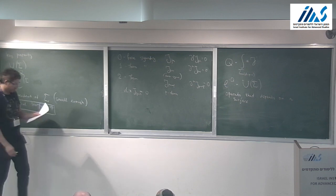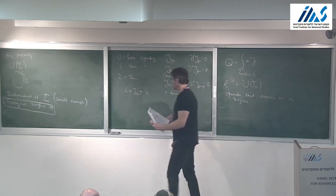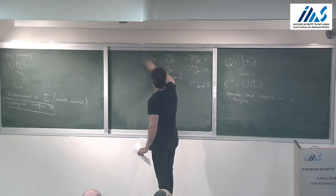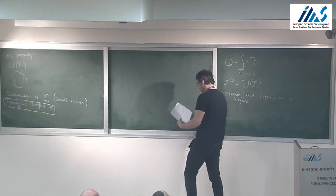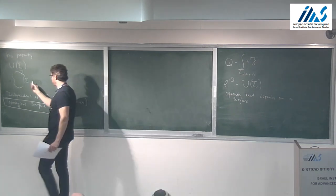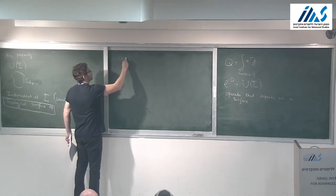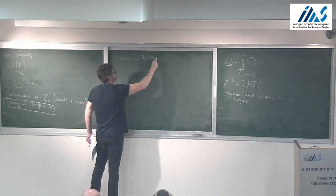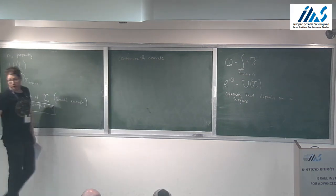Topological surface operators are the most abstract and general way to think about symmetries in quantum field theory. This notion generalizes also to discrete symmetries. If you have a topological surface operator, you can discuss continuous and discrete symmetries in the same framework, because these are all examples of topological surface operators.